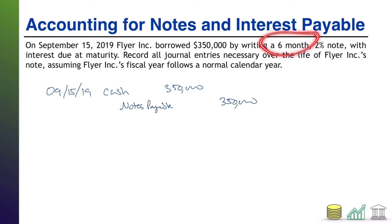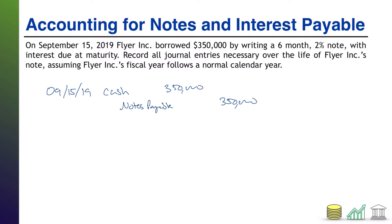It does not matter that the life is six months. It doesn't matter that it pays 2% interest. On the day when you first borrow the money, you simply get the cash and record the liability for the principal.